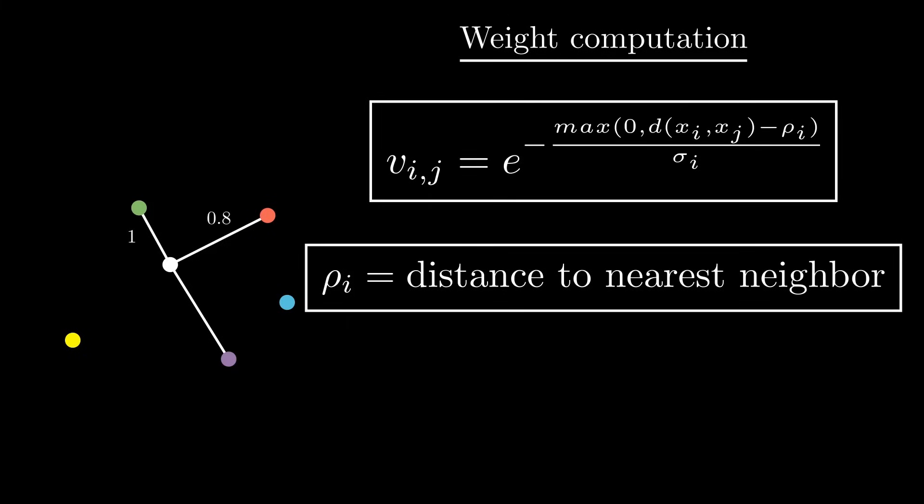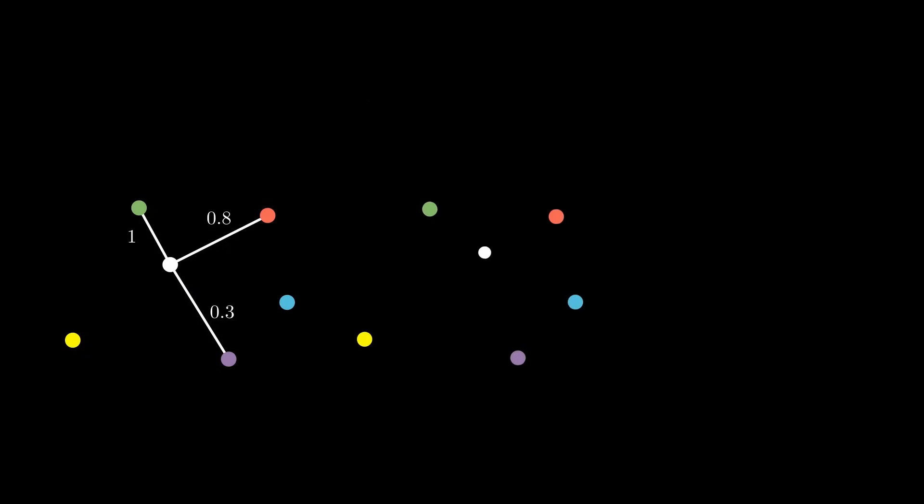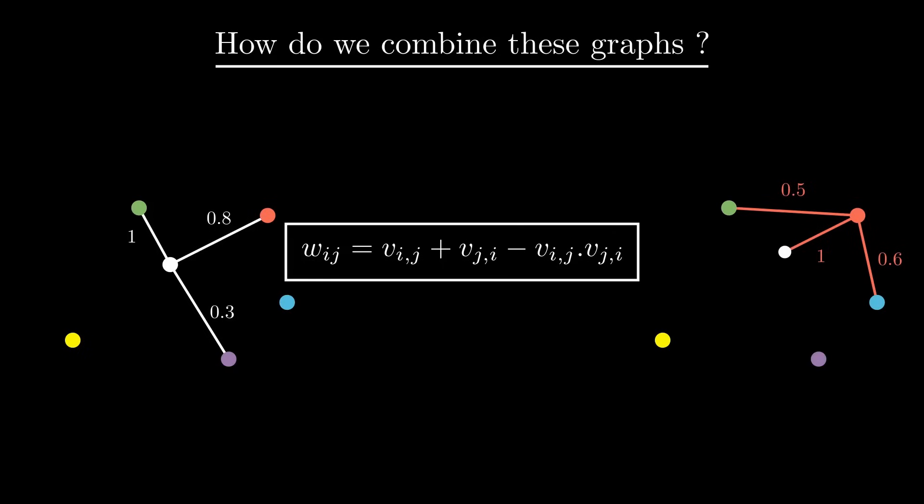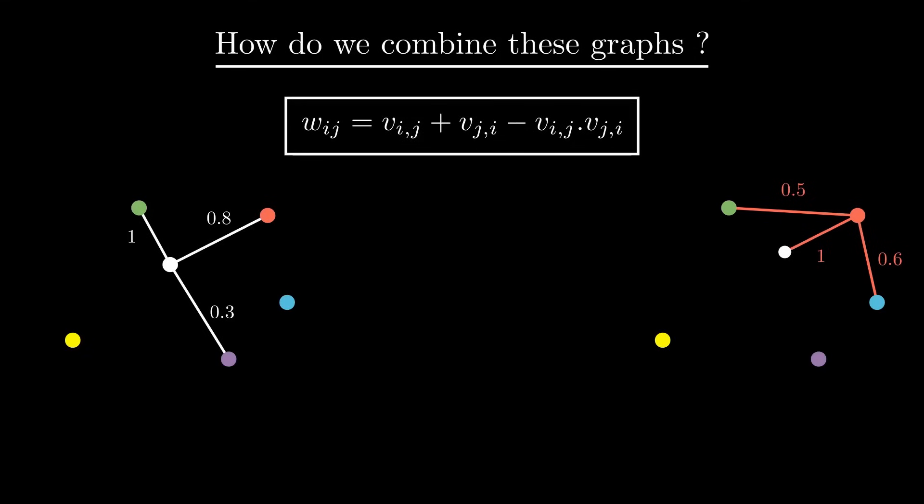Now that we have the weights for this sample, we will repeat the same process for each of the other samples. Although we only show three graphs here, we end up with one weighted graph per sample, which we need to combine into a single weighted graph. So how do we proceed? Well, to keep our weighted binary graph, we need to symmetrize it so that there's only one edge between any two points instead of two. We simply use this formula that does just that, combining edges and keeping the weights between 0 and 1. For instance, if we want to combine the edges between the white and red vertices, we simply take their respective weight and apply the formula, and end up with a weight of 1.